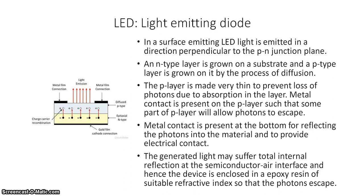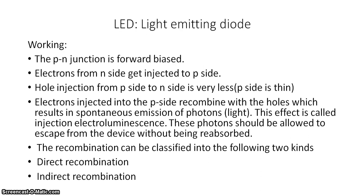The working: the pn junction is forward biased; electrons from the n-side get injected to the p-side. Hole injection from the p-side to the n-side is very less because the p-side is thin. Electrons injected into the p-side recombine with the holes, which results in spontaneous emission of light. This effect is called injection electroluminescence. These photons should be allowed to escape from the device without being reabsorbed.